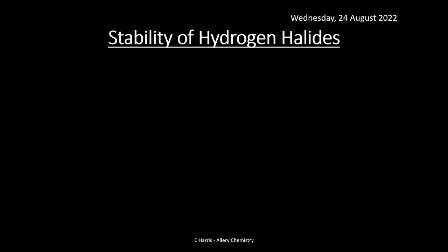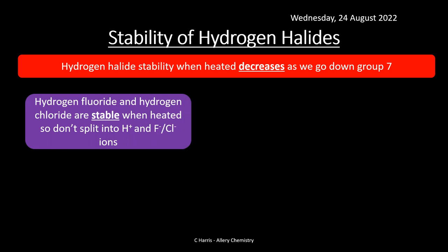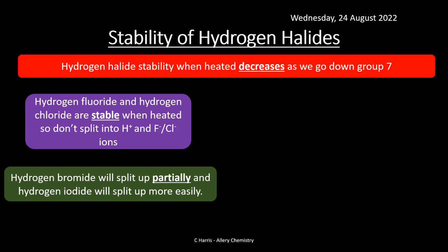Hydrogen halide stability when heated decreases as we go down group 7. Hydrogen fluoride and hydrogen chloride are quite stable when heated — they don't split into H⁺ and F⁻ or Cl⁻ ions readily. Hydrogen bromide will split up partially, and hydrogen iodide will split up more easily.